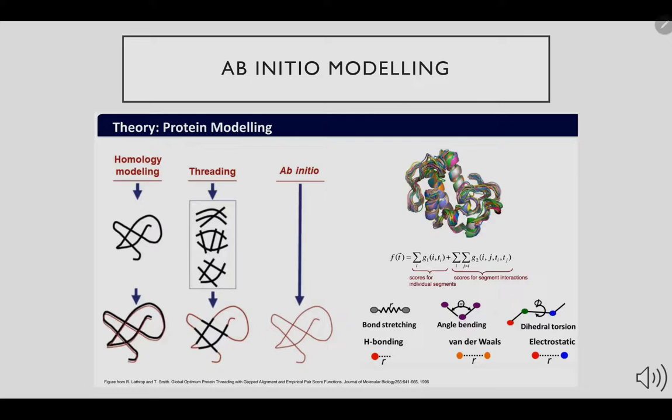Ab initio modeling instead utilizes basic parameters like bond stretching, angle bending, and dihedral torsion energetics to create a digital model of the protein.